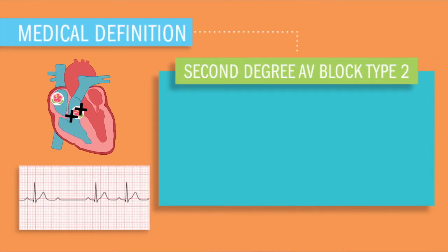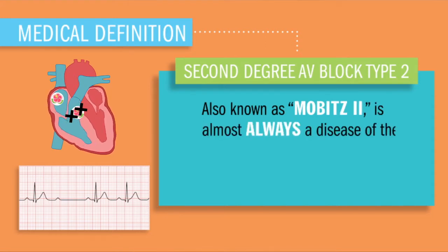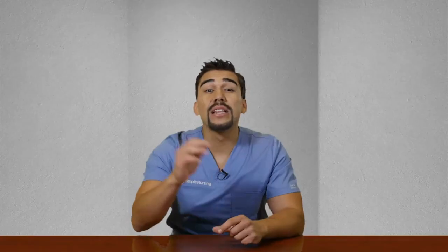Today we're talking all about second degree type II block, also known as Mobitz II, which is almost always a disease of the distal conduction system — the His-Purkinje system. Now, this delay is a little bit worse than our second degree type I, the Wenckebach.